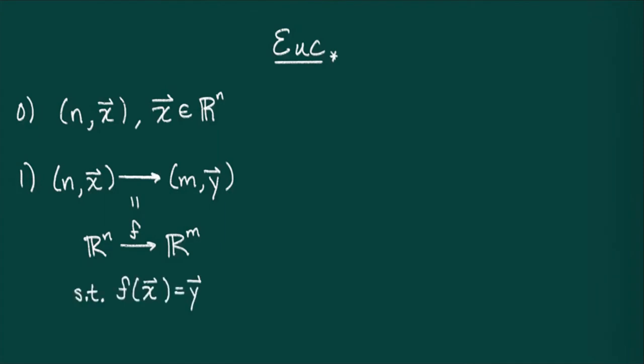For example, when n is equal to 1 and m is equal to 3, this is a path in three dimensions. x can be thought of as a point in time, and the condition is asking that the trajectory pass through a certain point at a certain time.